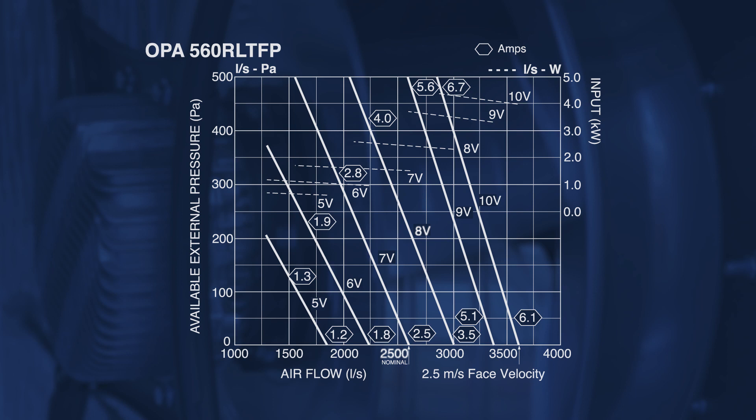For example, the evaporator fan on this OPA 560 is drawing 3.8 amps. Its speed input voltage is 8 volts. Plotted on the fan curve is an estimated 275 pascals of total system external static at 2,500 litres of airflow.